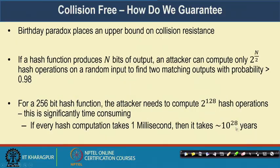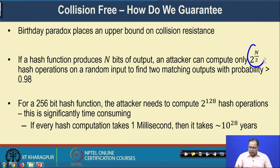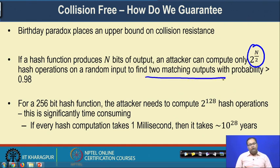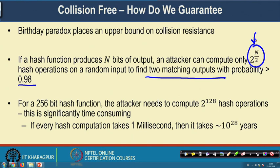This birthday paradox property also applies to finding hash collisions. It gives an upper bound on collision resistance. If a hash function produces n bits of output, then an attacker who can compute 2^(n/2) hash operations on randomly chosen inputs can find a hash collision with probability greater than 0.98 — meaning with 98% certainty the attacker can find two messages mapping to the same digest.